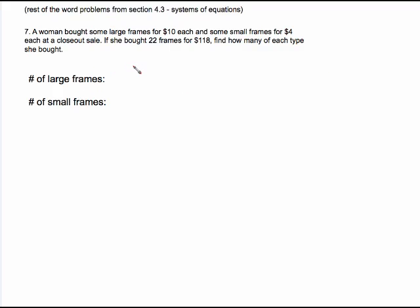This video will cover the last word problems from section 4.3. A woman bought some large frames for $10 each and some small frames for $4 each at a closeout sale. If she bought 22 frames for $118, find out how many of each type she bought.